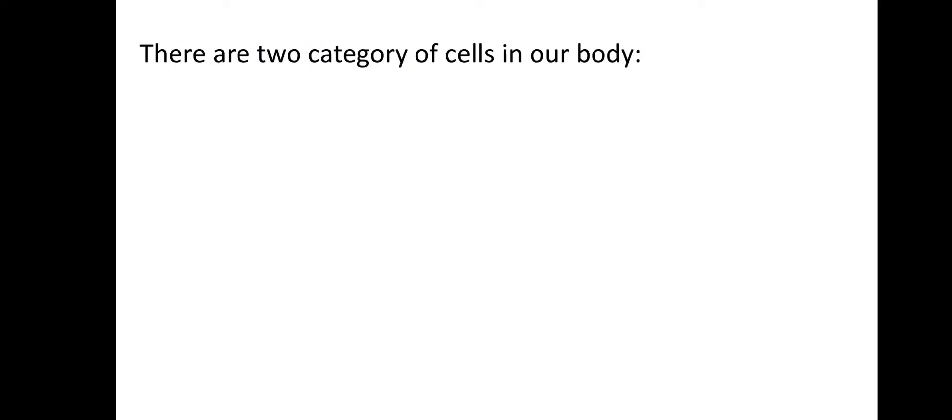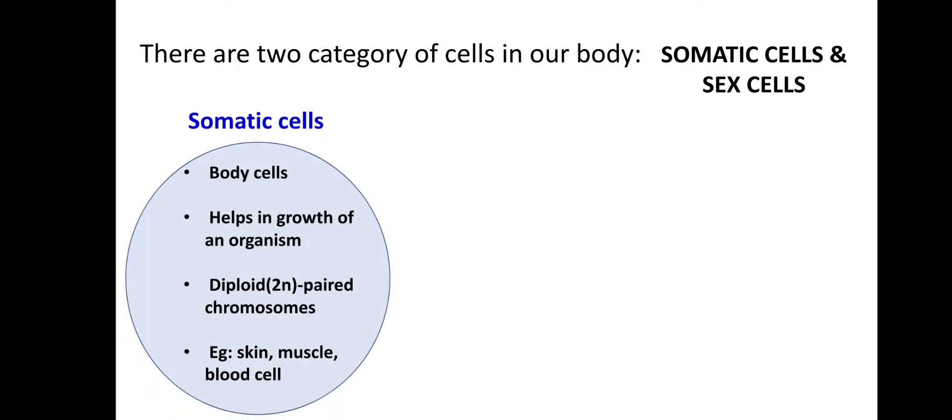What is meant by somatic cells? In our body, there are two types of cells: somatic cells and sex cells. Somatic cells are the normal body cells. They help in the growth of an organism. All somatic cells contain 46 chromosomes — 23 pairs — meaning they are in a diploid condition. Paired chromosomes are present. Examples include skin, muscle, and blood cells — all in the diploid (2N) condition.